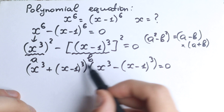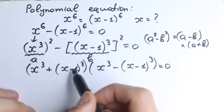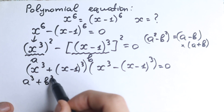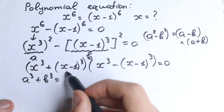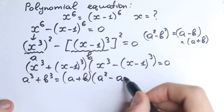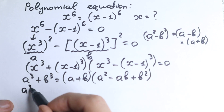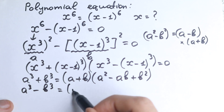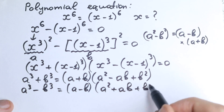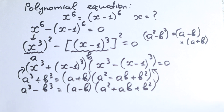Now we have a sum of two cubes in the first factor and a difference of two cubes in the second. Recall: a cubed plus b cubed equals (a plus b)(a squared minus ab plus b squared), and a cubed minus b cubed equals (a minus b)(a squared plus ab plus b squared). We apply both formulas here.